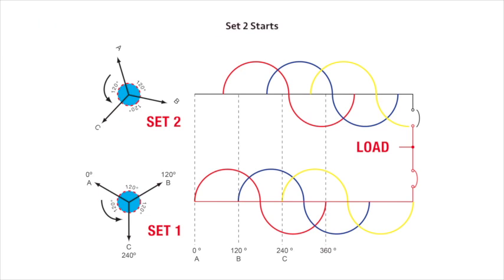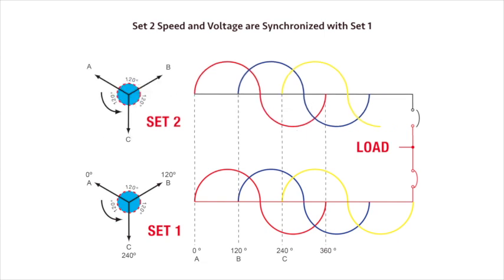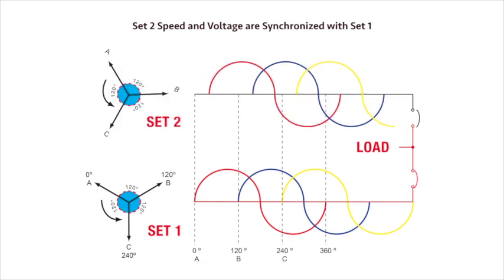Set two runs up to speed with a breaker open. Paralleling controls start synchronizing set two's voltage and frequency with that of set one.